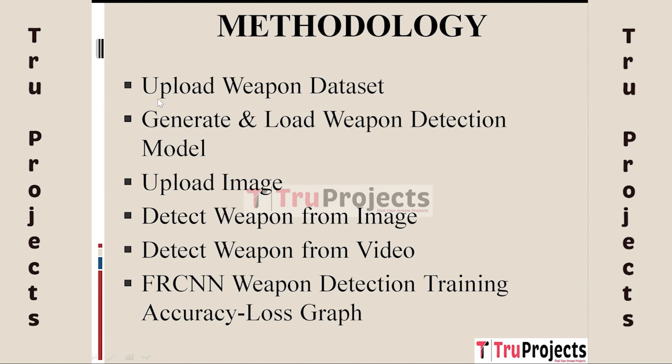To implement this project we have designed the following modules. The first module is Upload Weapon Dataset. This module involves uploading a dataset of images containing weapons. The dataset serves as the basis for training the weapon detection model. Each image is annotated with bounding box information using XML files indicating the location of the weapon in the image.